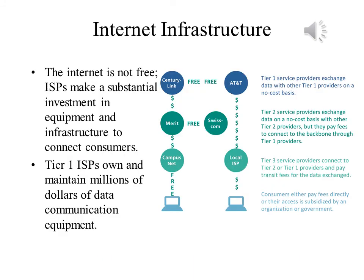Internet service is not free, even if we don't always get to see the bill. ISPs spend a lot of money on equipment and on infrastructure, and without this, none of us would be able to connect to the Internet. These ISPs also have to spend a lot to maintain the equipment that they own. Tier 1 providers exchange data with other Tier 1 providers at no charge. Tier 2 providers exchange with other Tier 2 providers, but they have to pay fees to Tier 1 providers. Tier 3 providers pay to connect to Tier 1 or Tier 2. And of course, consumers pay directly or indirectly.